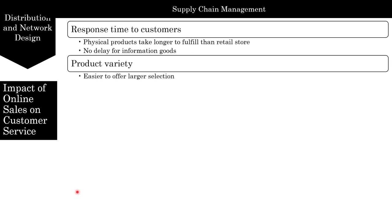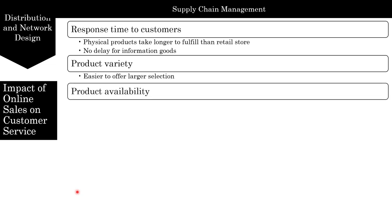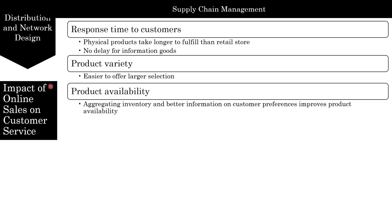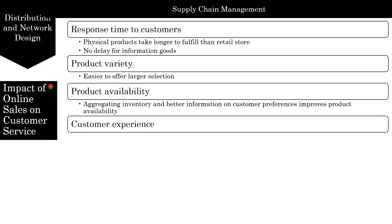Regarding product variety, a company selling online finds it easier to offer a larger selection of products than most brick-and-mortar stores — Netflix, for example, offers a much larger selection of movies than any video rental store. For product availability, by aggregating inventory, a company selling online improves product availability. Better information on customer preferences also allows firms selling online to improve availability. Online sales also affect customer experience in terms of access, customization, and convenience.